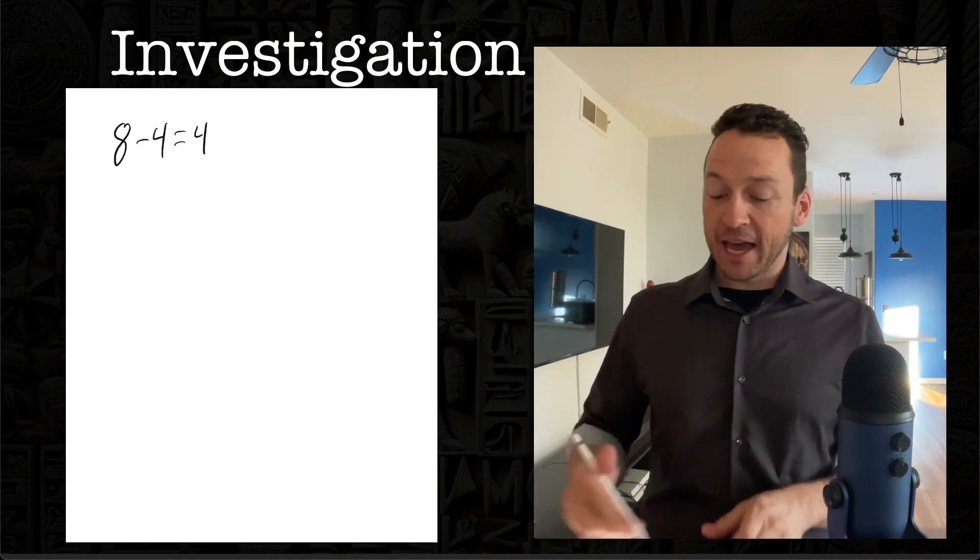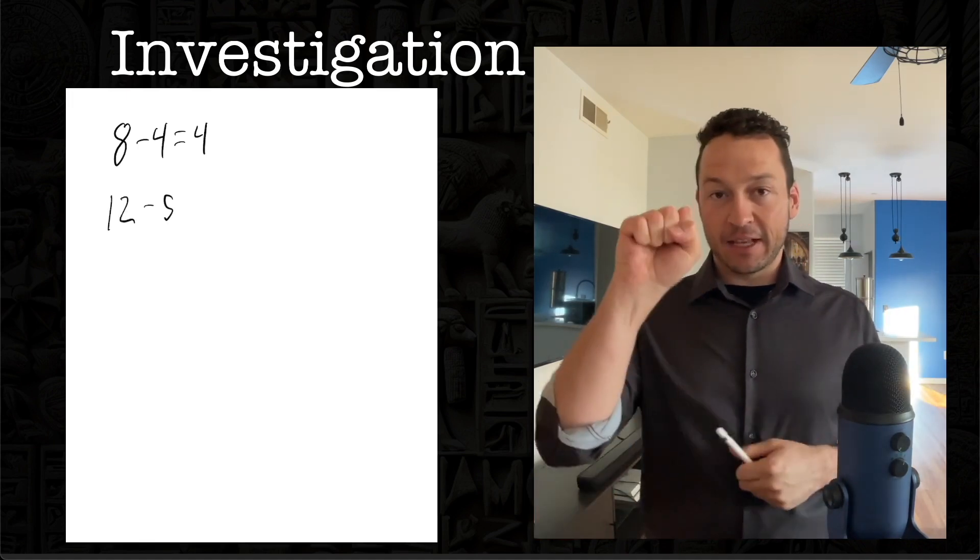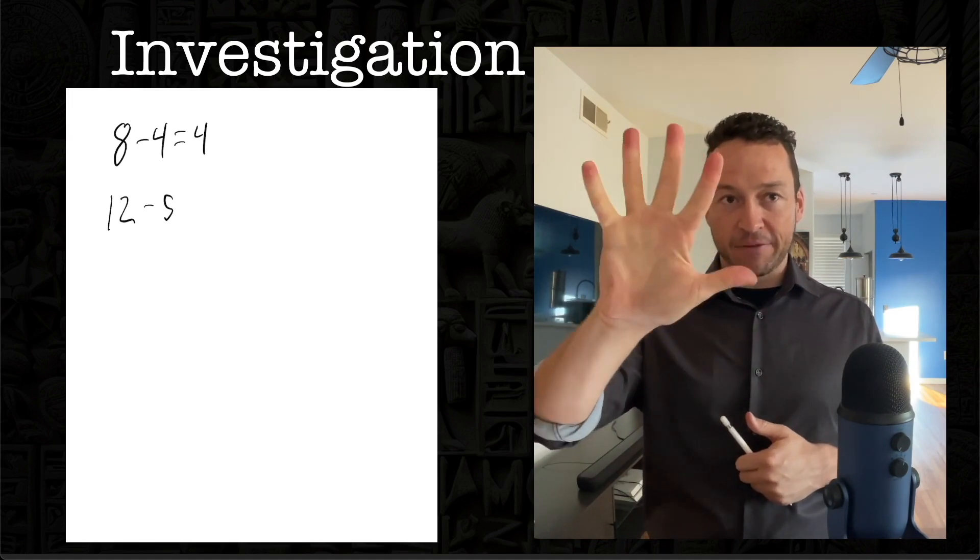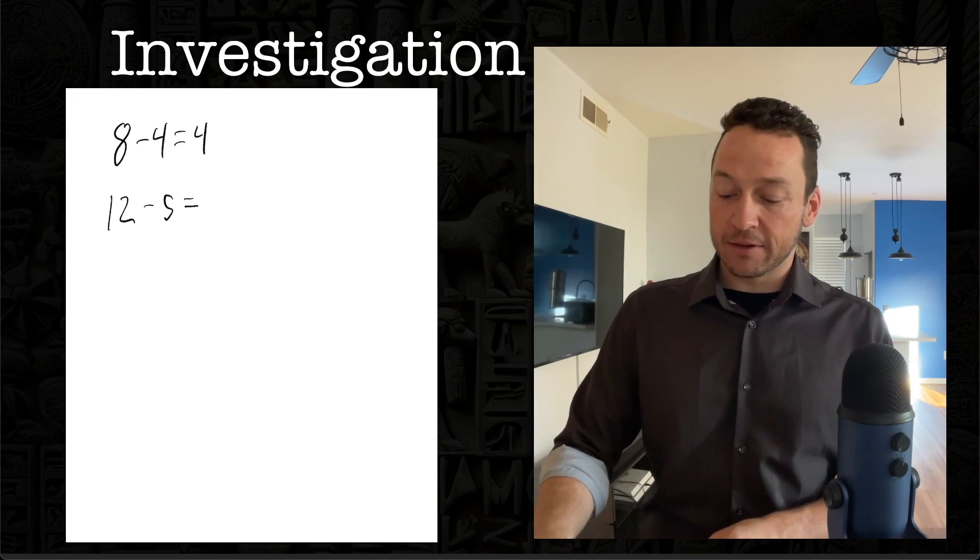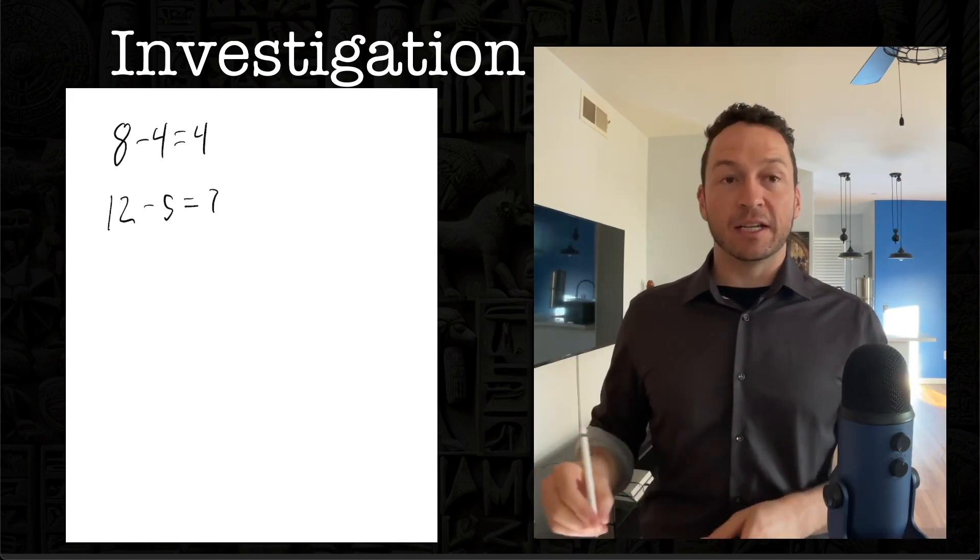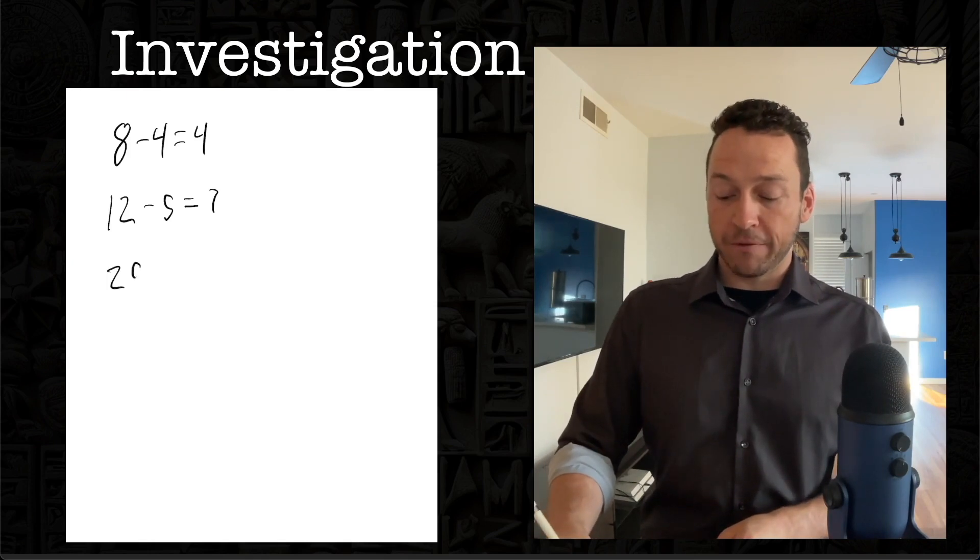He's going to try this again, a slightly harder one this time: 12 minus five. That's 11, 10, nine, eight, seven. Okay, and so he gets down to seven, pretty straightforward. Now he's going to challenge himself a little bit more. He's going to give himself the problem 25 minus 19.